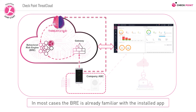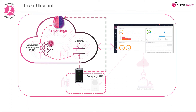In most cases, the behavioral risk engine is already familiar with the installed application, as it proactively scans all apps and all versions directly from the public app stores. In case a certain installed app is not known to the Harmony Mobile detection engine, it will analyze the app for malicious patterns and suspicious behavior.